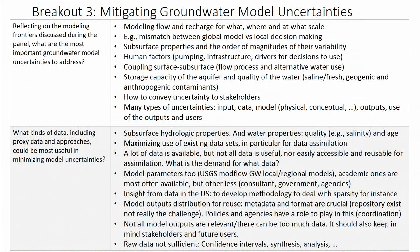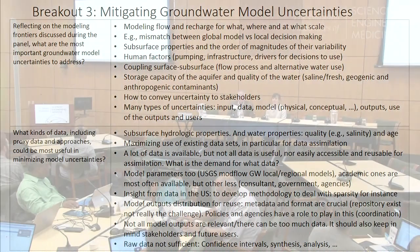We listed the types of uncertainties: uncertainties in the inputs, the data we rely on, the models — physical and conceptual — and the outputs. There's also uncertainty about the use of the outputs and who is going to use them. All of these uncertainties should be kept in mind all the way through the modeling process.